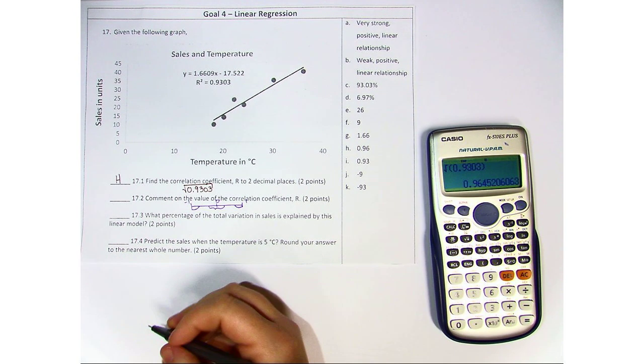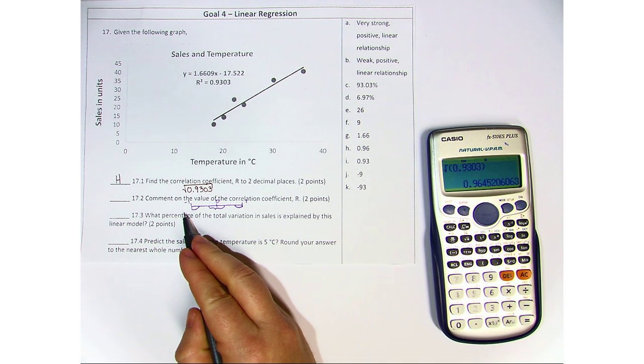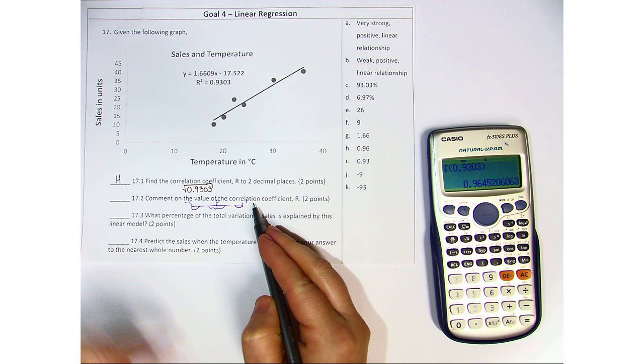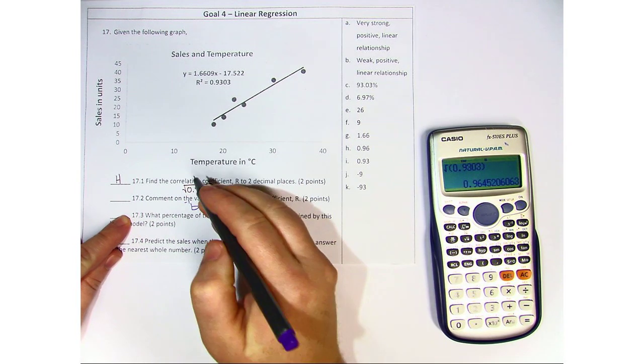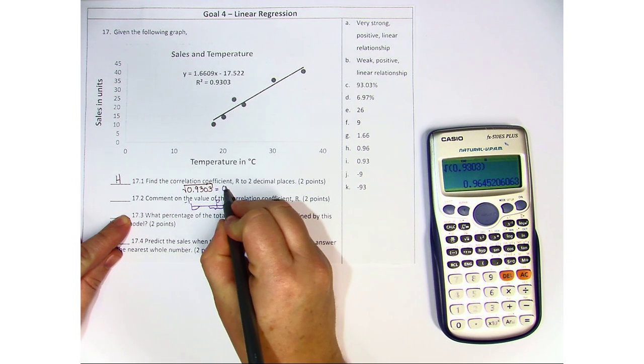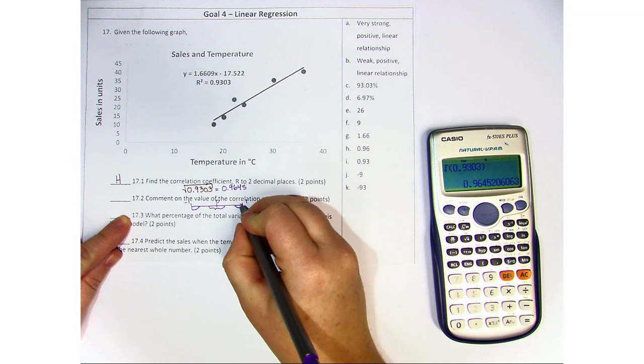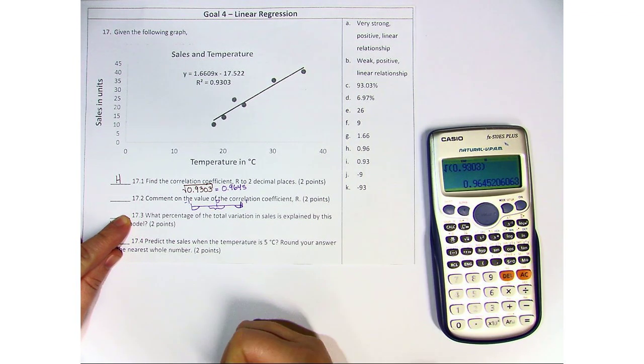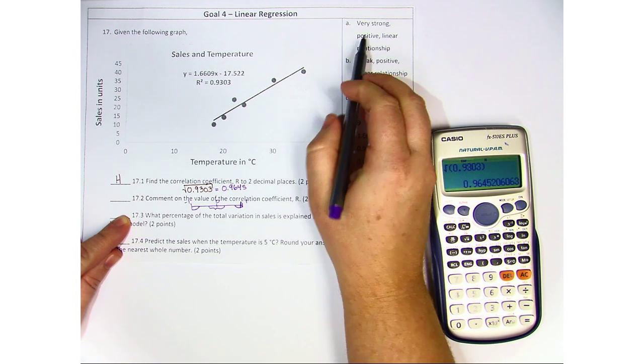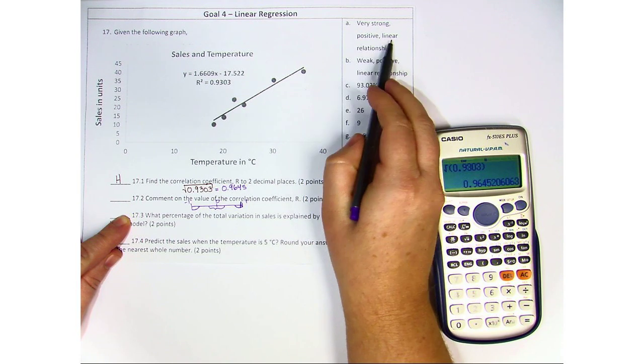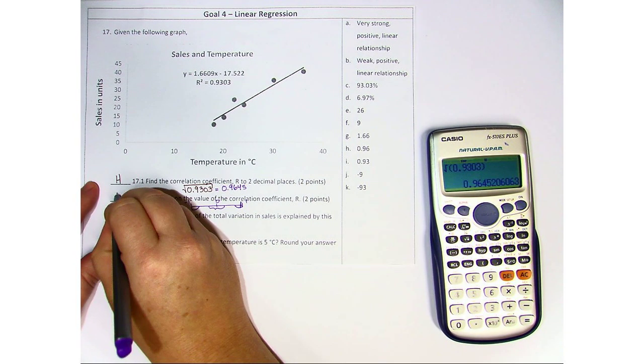And if it's negative or positive, depends of course if it's on the negative side of the number line or the positive side. So if we see that the answer here for H was 0.9645, that is very, very close to positive 1. So here we see a very strong positive linear relationship, or A.